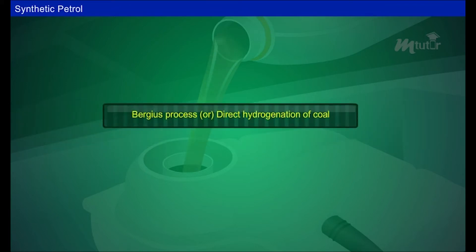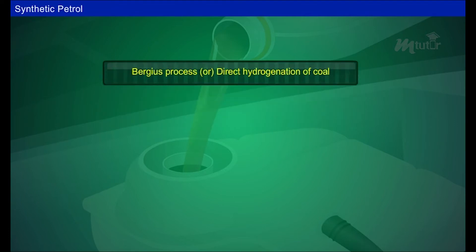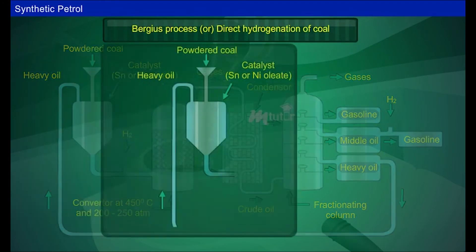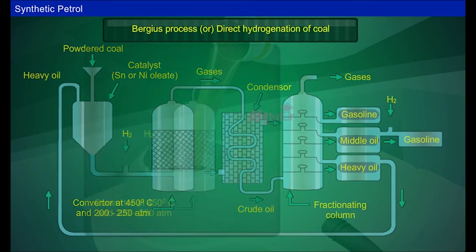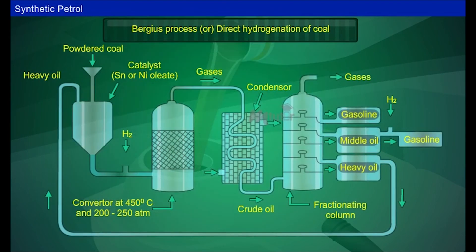Bergius process or direct hydrogenation of coal. In this method, coal is used as the raw material. Coal is a mixture of high molecular complex organic compounds with a low percentage of hydrogen content.